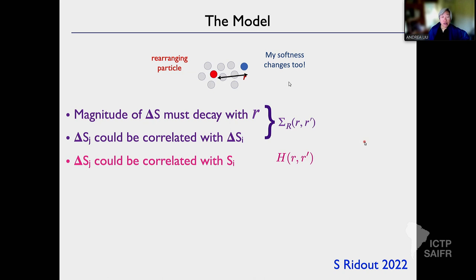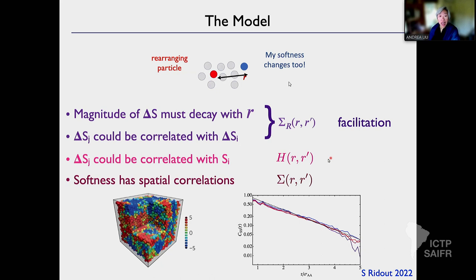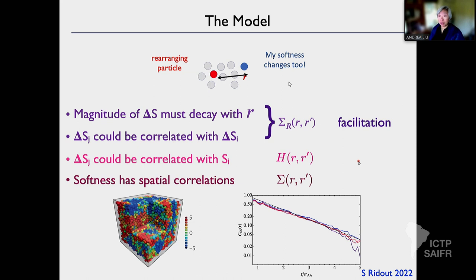So we allow for a kernel that correlates the changes of softness of a particle at R prime with the softness of a particle at R, and that decays with the distance R minus R prime. We also have a kernel that says the change of softness of the spectator particle could be correlated with the softness of the initial particle. And we take into account that softness itself has spatial correlations — correlations that decay exponentially on the scale of a particle size. These are three sorts of kernels. But time reversal symmetry imposes constraints so they're not independent.